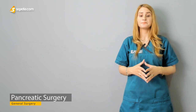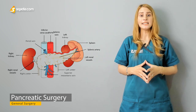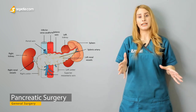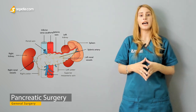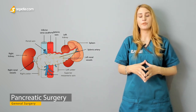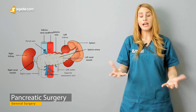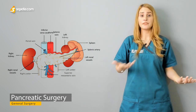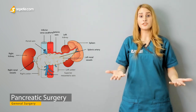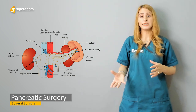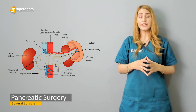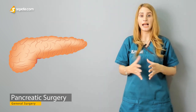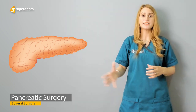In today's lecture, we will be talking about the surgical anatomy of the pancreas, the important relationships — because it's part of the retroperitoneum — the structures related to the pancreas in the retroperitoneum, the different parts of the pancreas, and the exocrine and endocrine portions of the pancreas.